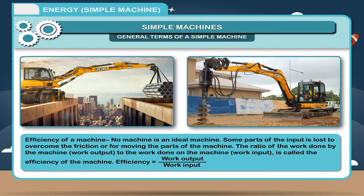Efficiency of a machine: No machine is an ideal machine. Some parts of the input is lost to overcome the friction or for moving the parts of the machine. The ratio of the work done by the machine, work output, to the work done on the machine, work input, is called the efficiency of the machine. Efficiency is equal to work output divided by work input.